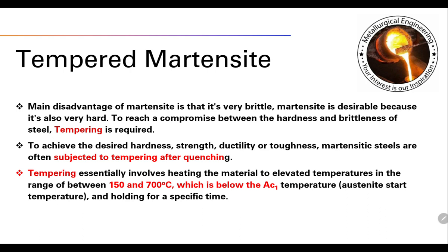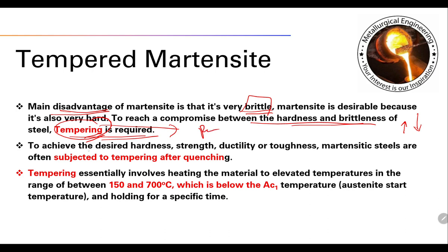Martensite is very hard but also very brittle, which is a disadvantage. To reach a compromise between hardness and brittleness, tempering is required, which produces some reduction in hardness and a slight increase in toughness or ductility. Tempering relieves residual stresses to achieve the desired hardness, strength, and ductility. Martensitic steels are often subjected to tempering after quenching.